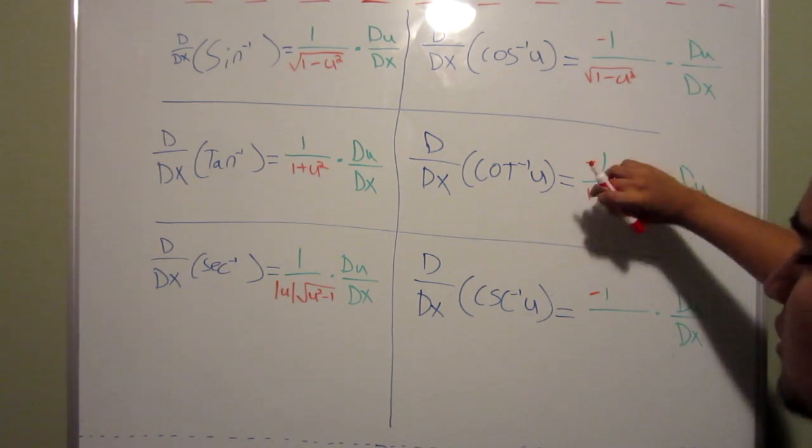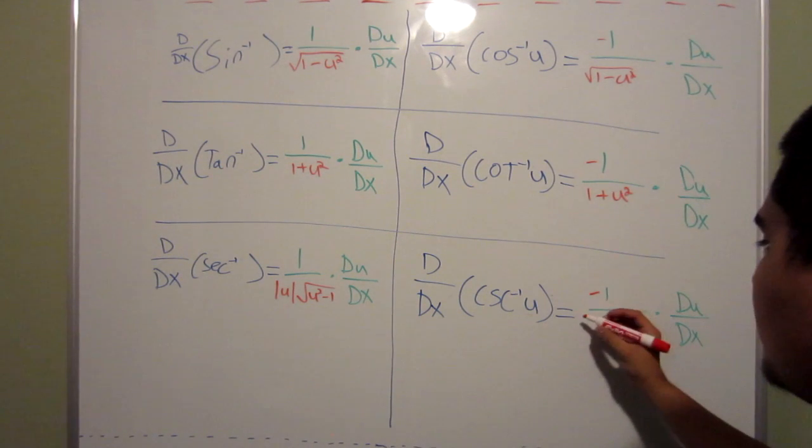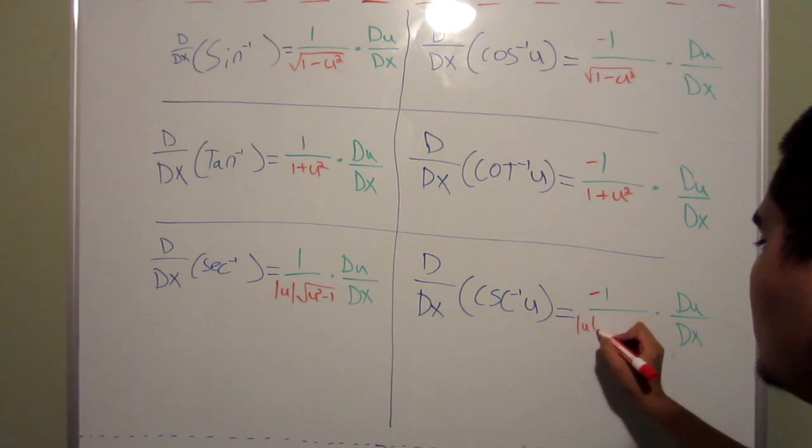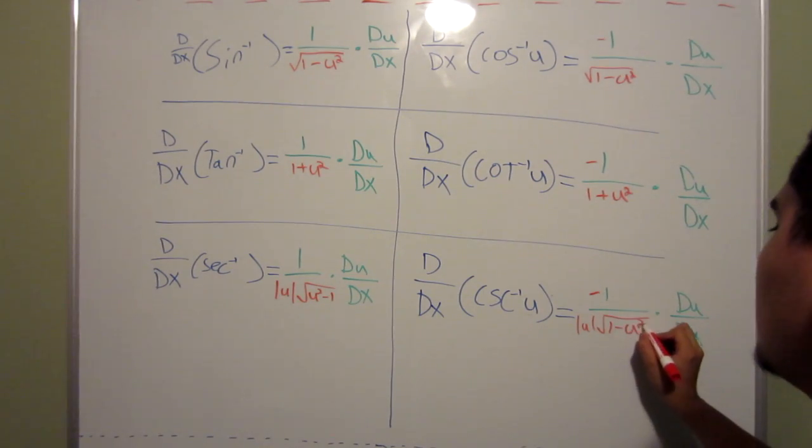It's negative one, where the same thing as that one, you put the absolute value u, take the root out, and it flips the number, so it's one minus u squared.